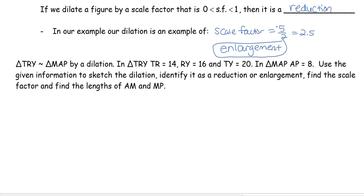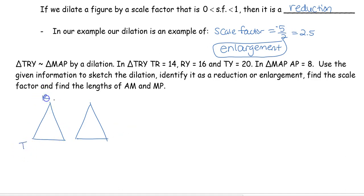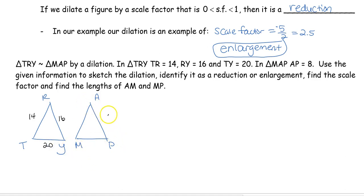For our last question: triangle TRI is similar to triangle MAP by a dilation. We draw generic triangles — this has no bearing on what it actually looks like; it could be obtuse or right. In triangle TRI, TR = 14, RY = 16, TY = 20. In triangle MAP, AP = 8. The first part asks us to sketch the dilation and identify it as a reduction or enlargement.